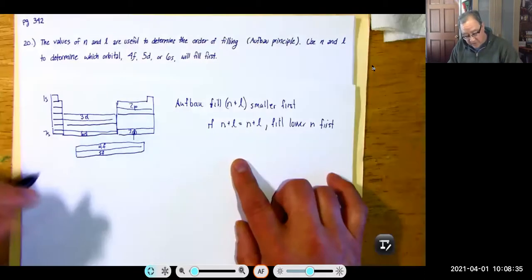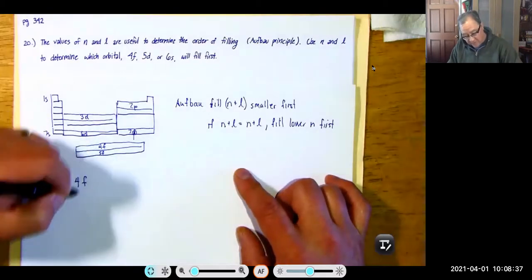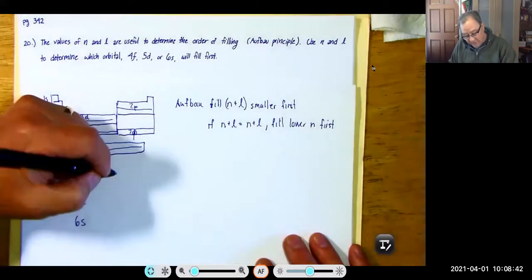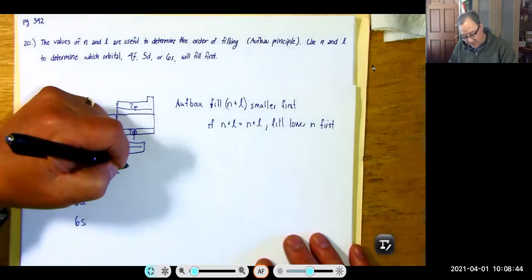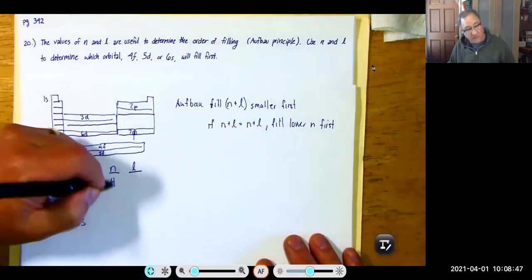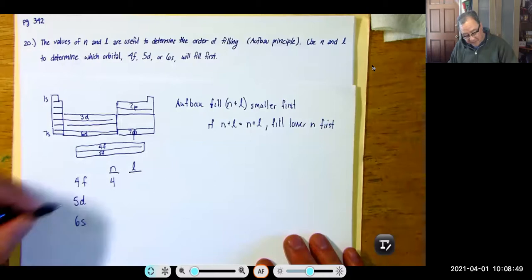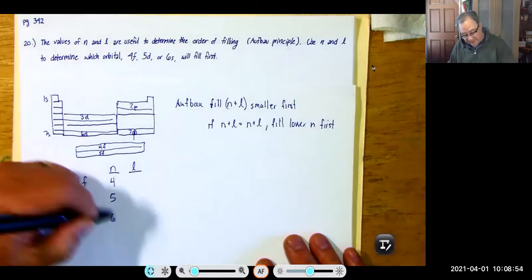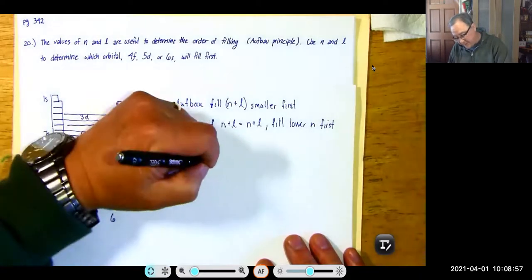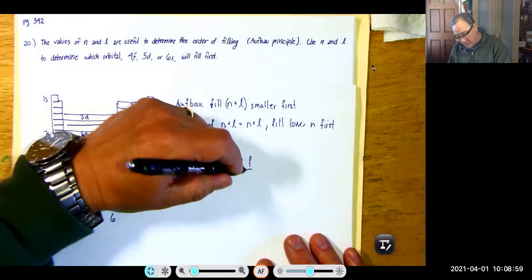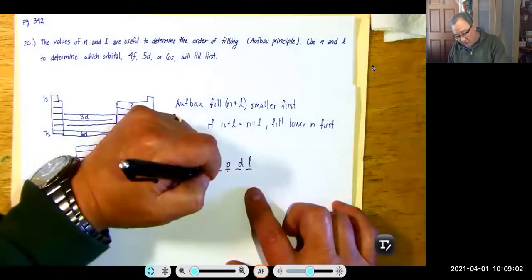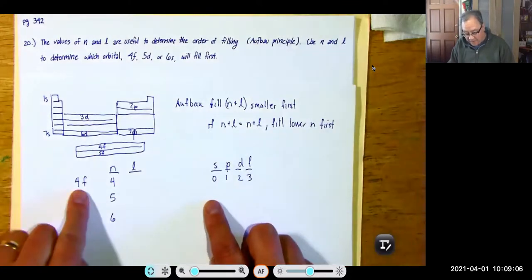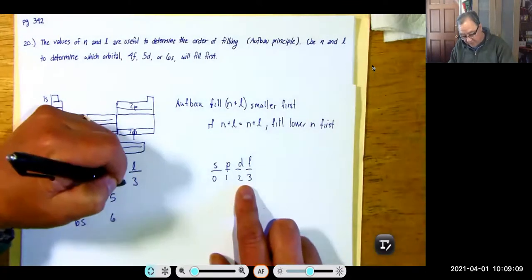Let's take a look at 4F versus 5D versus 6S to see which fills first. We need to look at N and L. N is 4 for 4F, N is 5 for 5D, and N is 6 for 6S. For SPDF, the L values are 0, 1, 2, 3. So 4F: F is 3, total is 7.